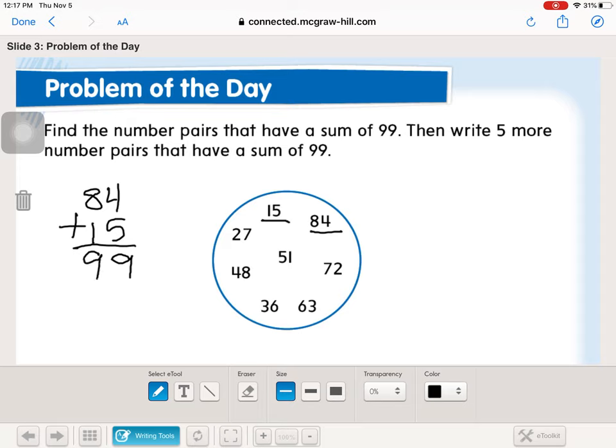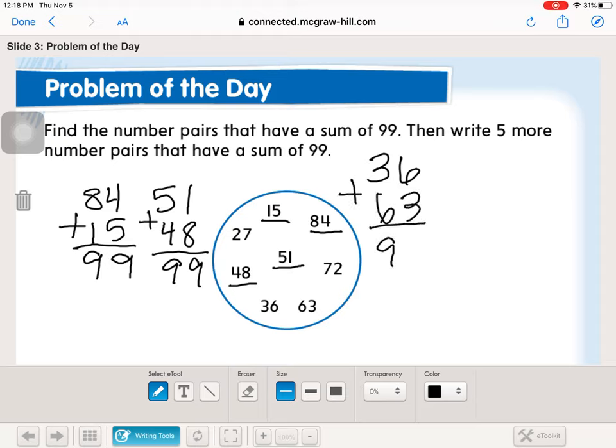We also have kind of the opposite of that, 51 and 48. If you think kind of like 10 pairs, we're looking for nine pairs this time. So we have 36 and 63, and then we have 27 and 72. See if you can come up with five more sums that equal 99. Push play when you're ready.